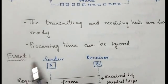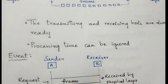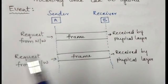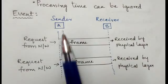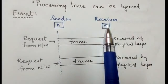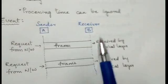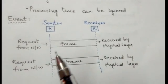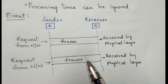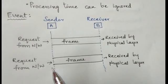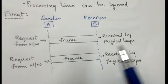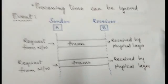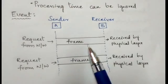The event in Simplest protocol is nothing but sending the data from sender to the receiver. When the network layer gets the data, it requests the sender, and the sender sends the frame to the receiver, where it is received by the physical layer. A request is sent from the network layer to send the data, it is made into frames, the frame is sent from sender to receiver, and it is received at the physical layer of the receiver. Once you understand what an event is, it's very simple.